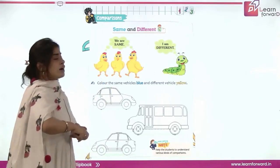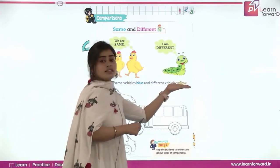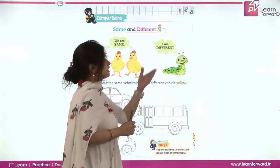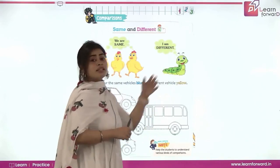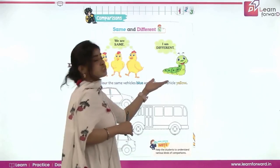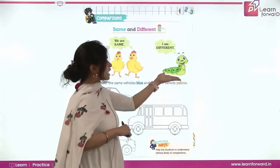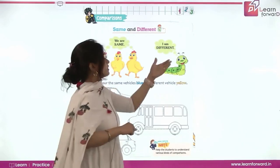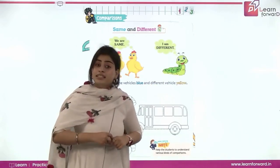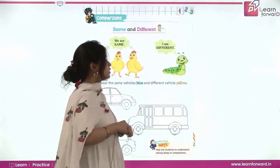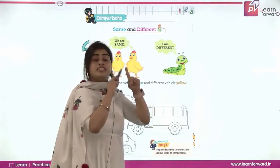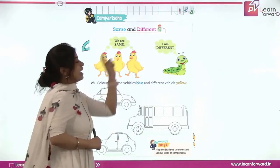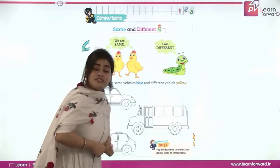But this caterpillar here is not the same — this is different. This caterpillar is different; it's not in yellow color. Which color is it? It's green in color. This caterpillar is green in color, so this caterpillar is different. These chicks are same, and this caterpillar is different.